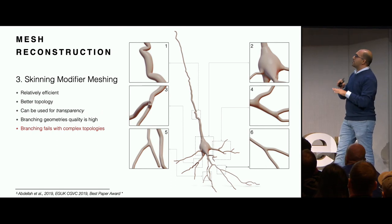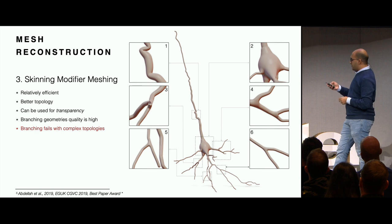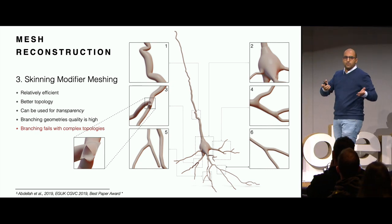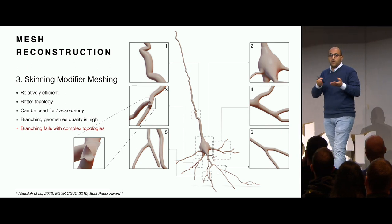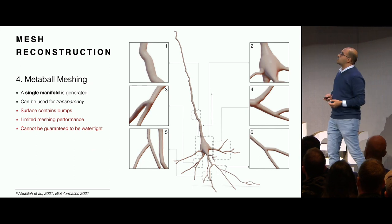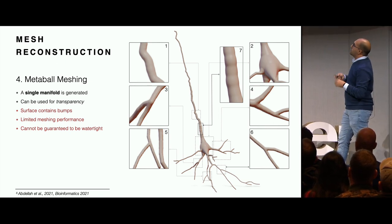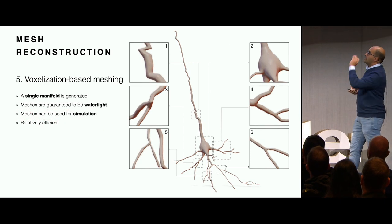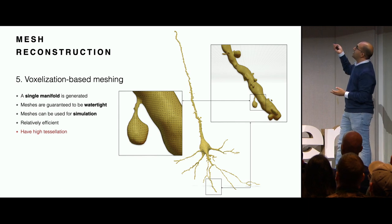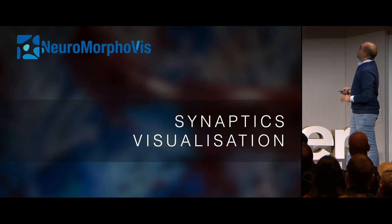Skinning modifiers are perfect - they have optimum topology and can be used for transparency because they make very nice branching geometry. However, branching might fail in certain complex topologies, leaving open geometry - not always ideal. Still, they give good results 99% of the time. We also used metaball meshing, which can give one single manifold but might not be watertight. Recently, voxelization-based remeshing was integrated in Blender, so we can generate watertight meshes suitable for simulations, though with high tessellation.